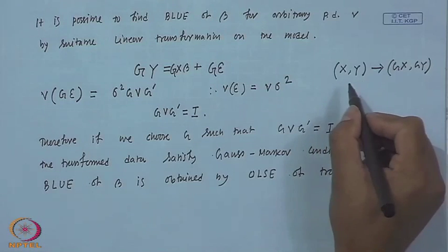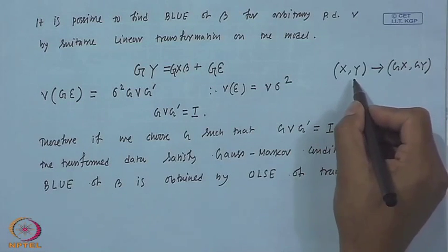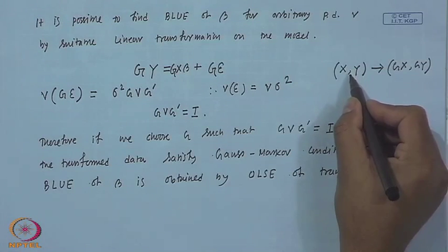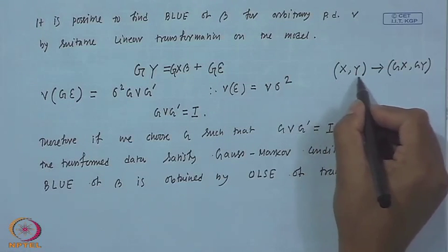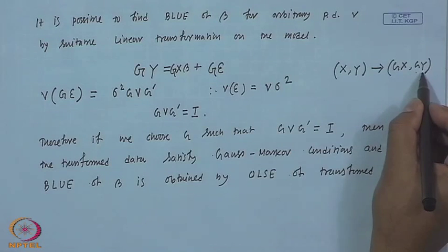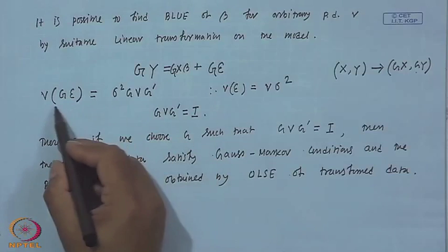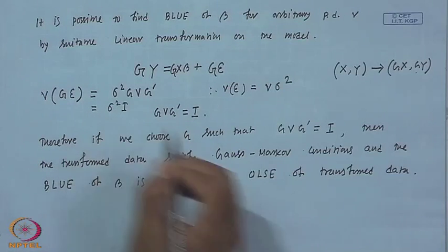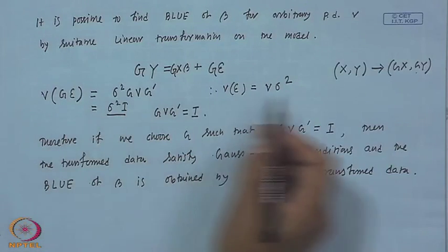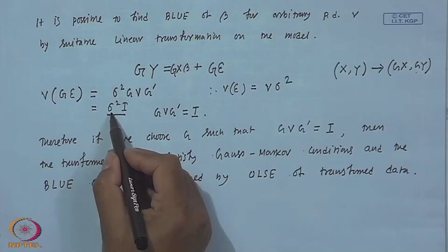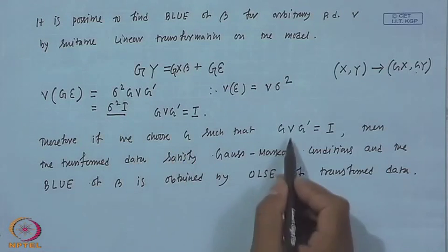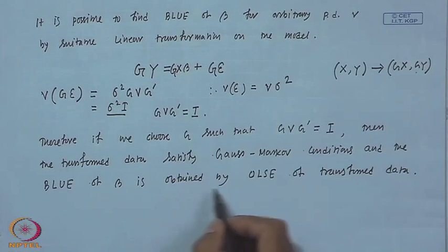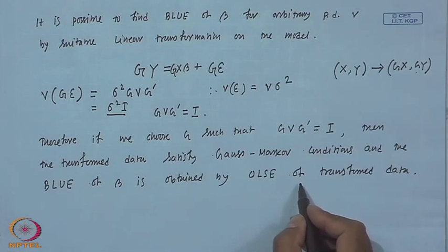My original data does not satisfy the basic assumption — it has inequality in variances and the errors are correlated. So we transform the data to Gx and Gy, choosing G in such a way that the transformed error has variance σ²I. Once the transformed error has variance σ²I, it satisfies the Gauss-Markov conditions, and the BLUE of β can be obtained by ordinary least square on the transformed data.